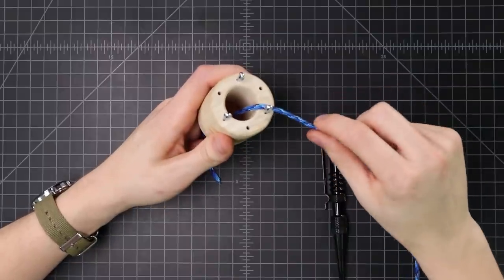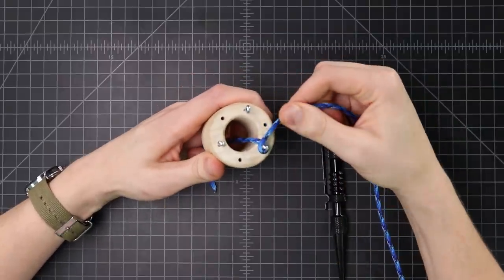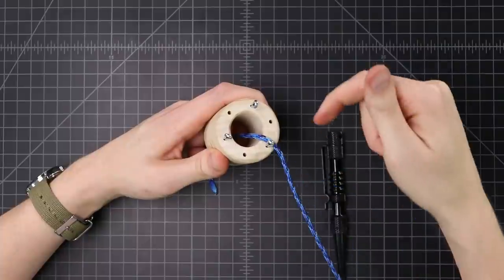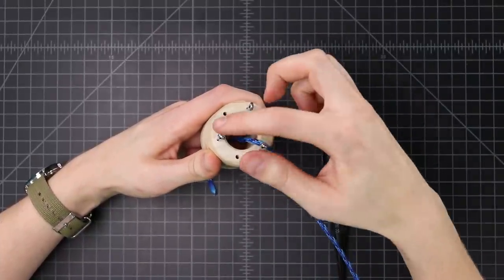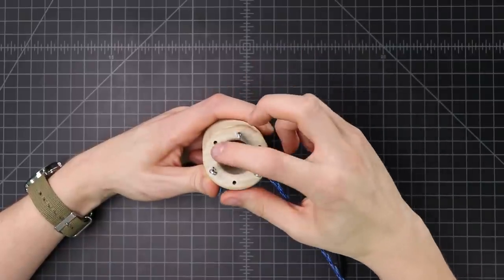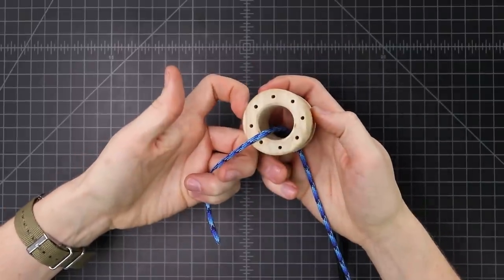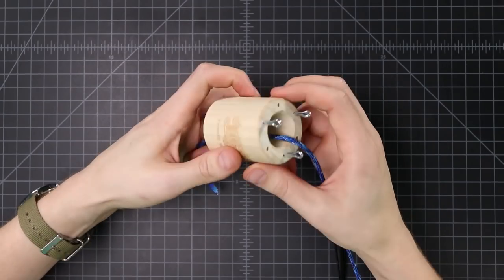Then we're gonna start wrapping it around a peg clockwise, but we're gonna be moving around our spool here counterclockwise. So I'm just using three pegs. This one's set up for up to six and the other side has up to eight. We've got a couple different sizes of these. This is our large one.